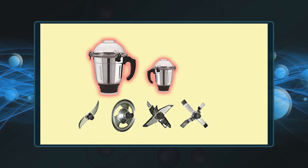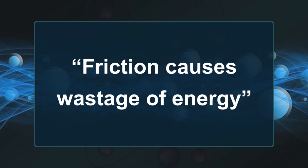Do you know what heat is? Yes, it is a form of energy. Where is this energy coming from? It is coming from the energy supplied to move the moving parts of the machine. It means that some of the energy given for moving the objects is converted into heat and it is lost. Since we are losing the energy, in this situation also friction is an undesirable thing. So friction causes wastage of energy also.